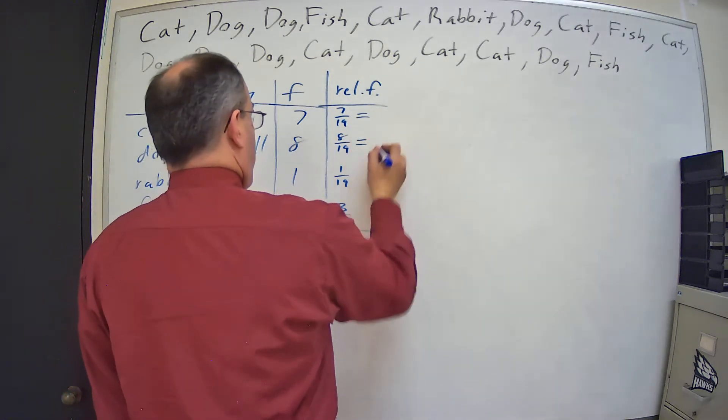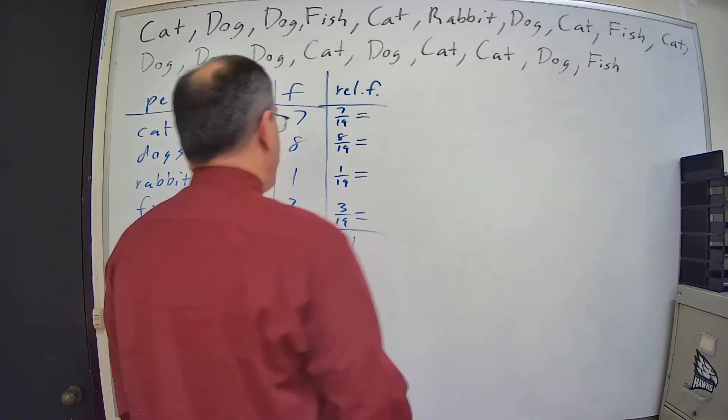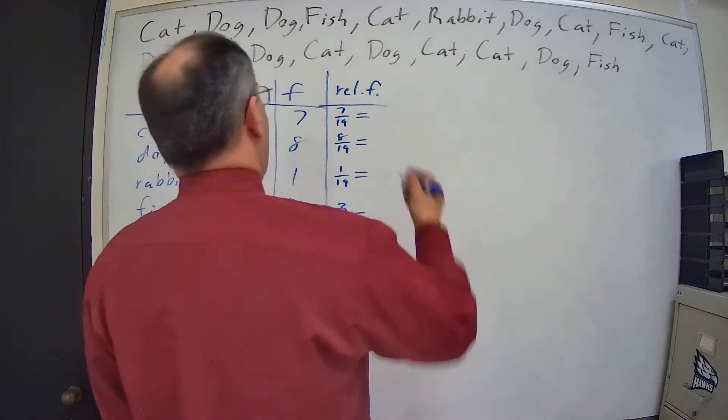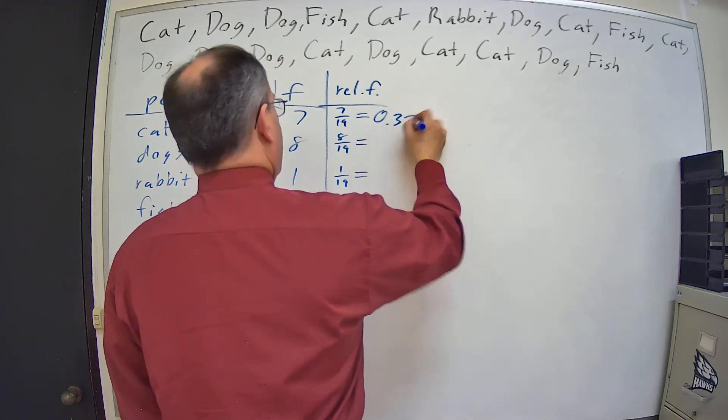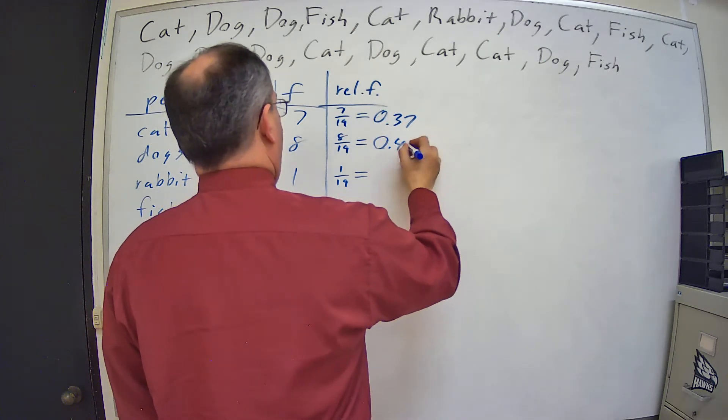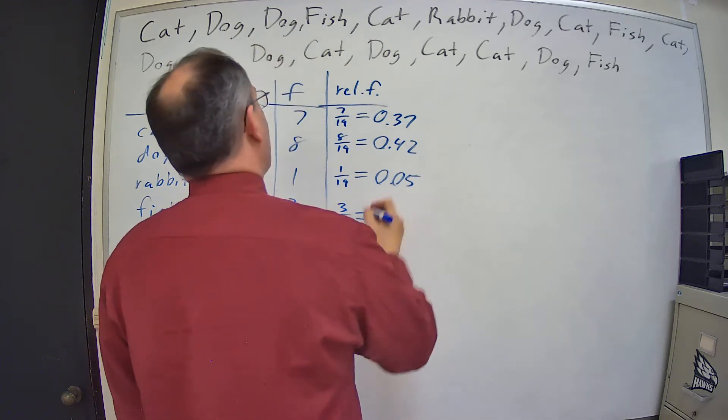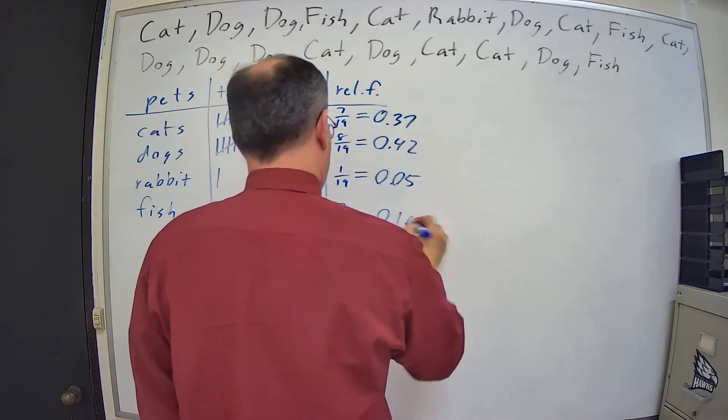Now, because I know I'm going to be doing these graphs and such, I'm going to put these in decimal form. So we have 0.37, 0.42, 0.05, and 0.16.